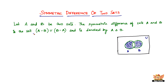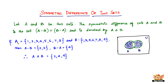Let's look at a quick example to further understand the symmetric difference of two sets. If A equals {1, 2, 3, 4, 5, 6, 7, 8} and B equals {1, 3, 5, 6, 7, 8, 9}, then what is A minus B, and what is the symmetric difference A△B?